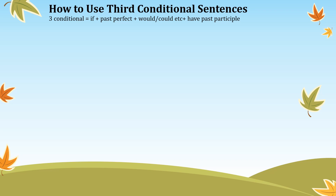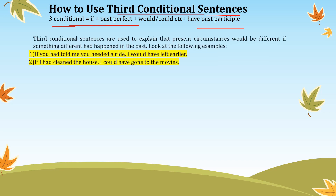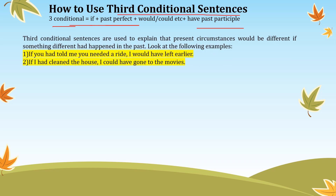How to use third conditional sentences. The structure is: if + past perfect in the if-clause, and 'would/could' + past participle in the main clause.